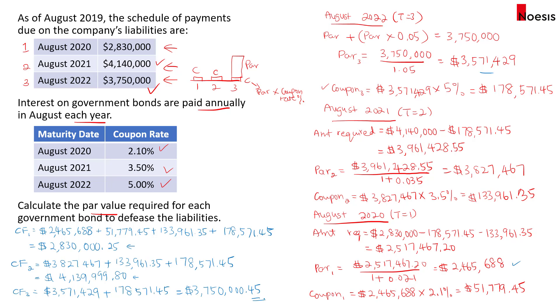The key to answering questions on cash flow matching is always to start from the last cash flow and work backwards to get the required par value and coupon for each bond.